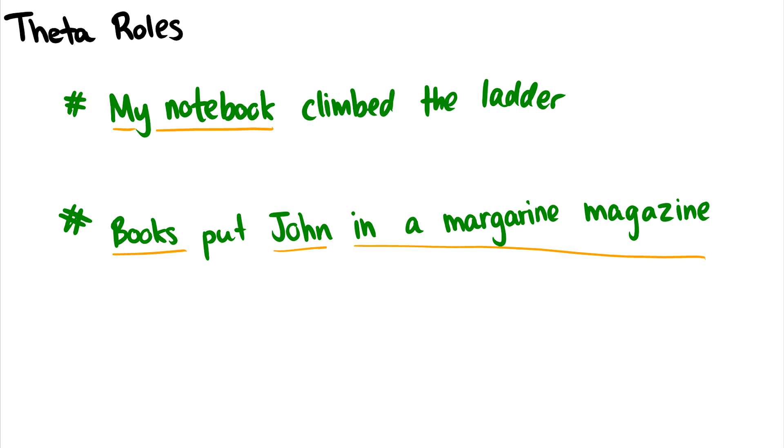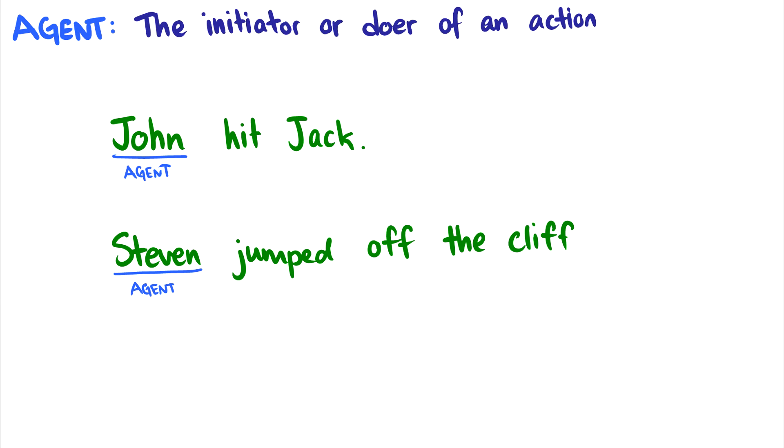Let's look back at the previous sentence. My notebook climbed a ladder. Well, climbed takes an agent. You have to climb. You have to physically climb. You have to be the doer of climbing. But notebooks can't be agents. Notebooks aren't sentient. That's where this sentence is going wrong. We need an agent for this, but the notebook is not a valid agent. That's one basic example. So those are agents, initiators or doers of an action.